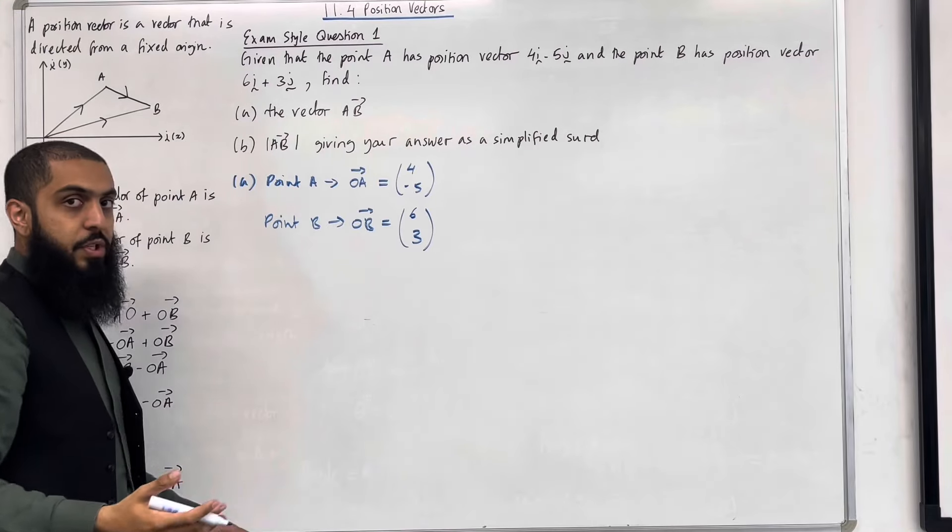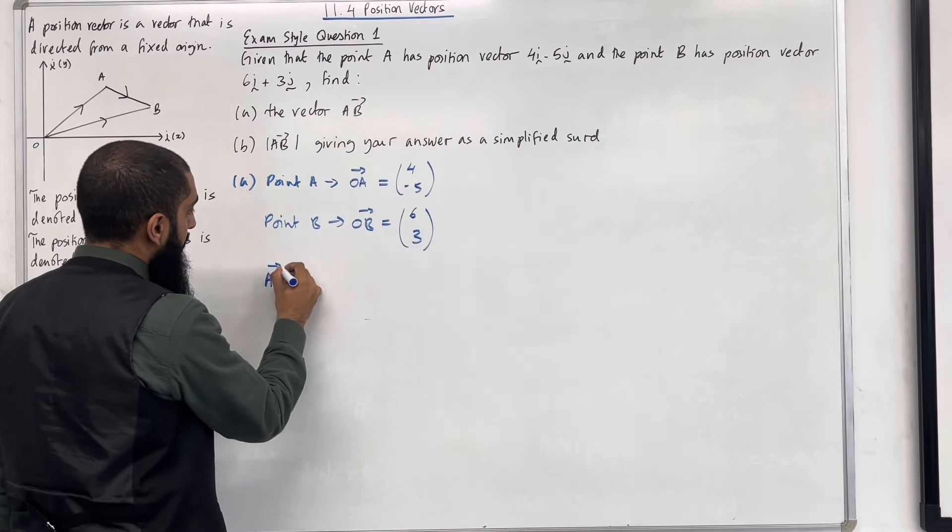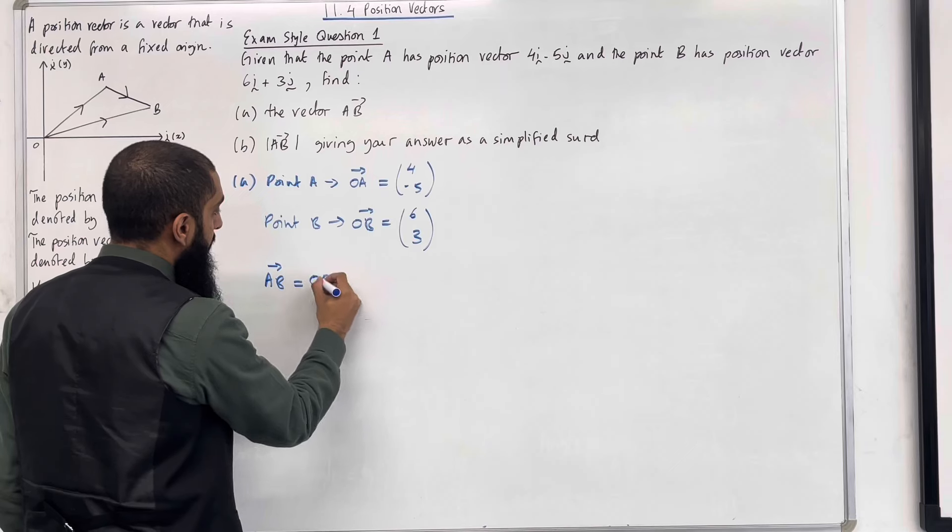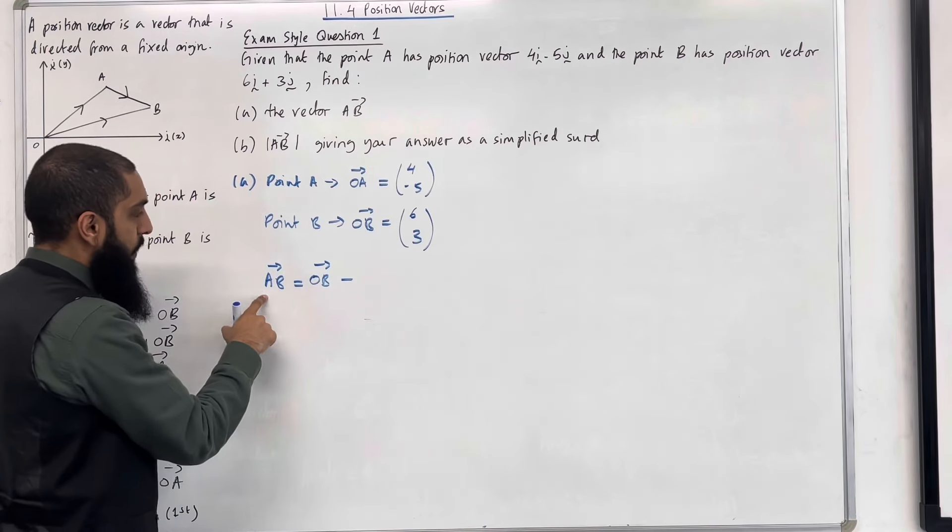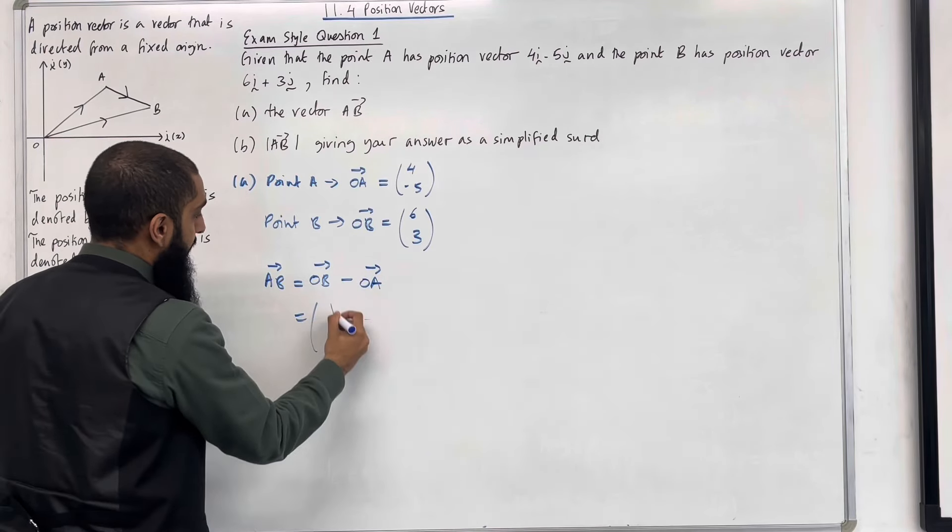Now what I want to do is work out the vector A to B. To find the vector A to B, we have to do the second letter, which is B. So we write O to B. Take away the first letter, which is A. So it is O to A.